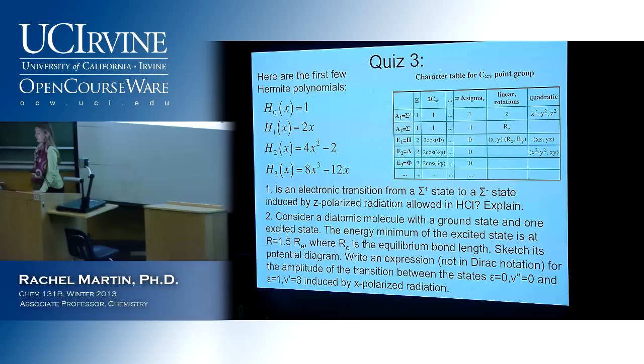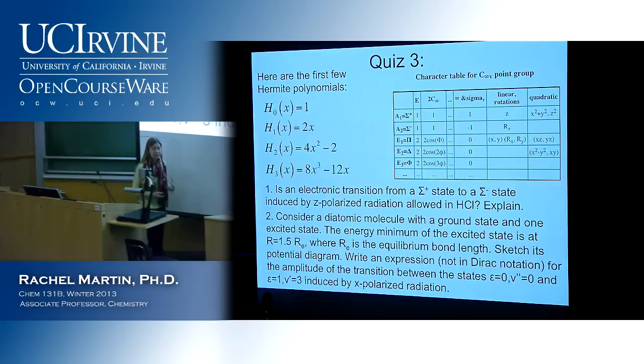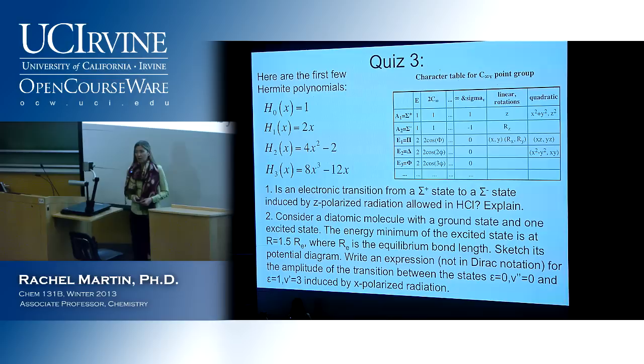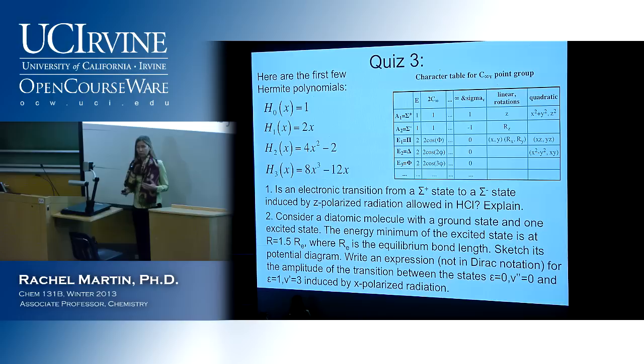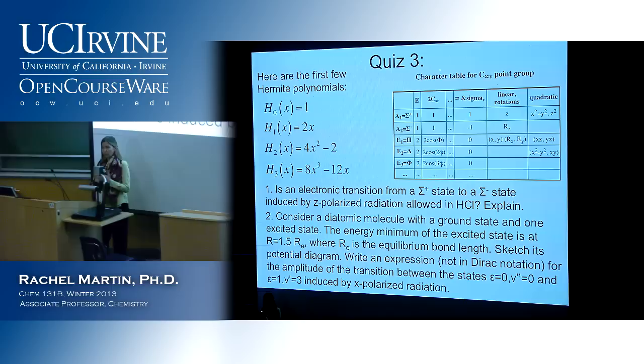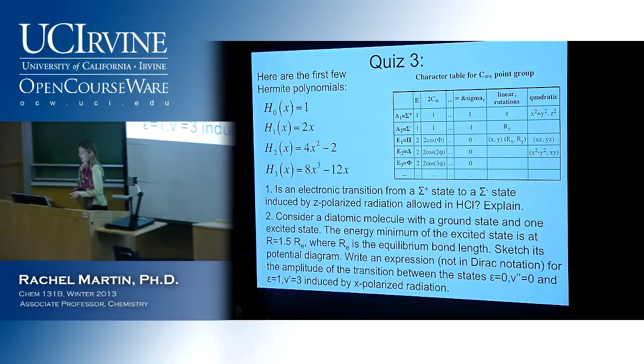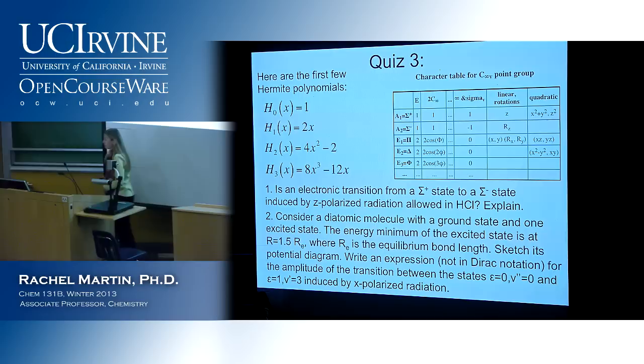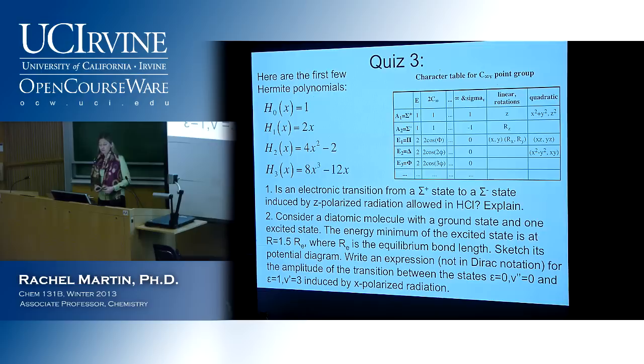The second one, basically, I just wanted you to draw a potential diagram for these electronic states. I said it only has two to make it relatively simple. And the business about the upper state being shifted in the x direction by 1.5 times the equilibrium bond distance is just to show that the upper state is shifted over in the x direction as far as where its minimum is. If you drew something that looks kind of like that and drew in some vibrational energy levels, then that's good. It's useful to be able to visualize these things.